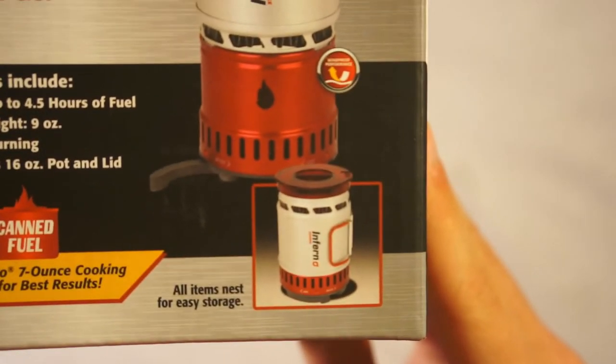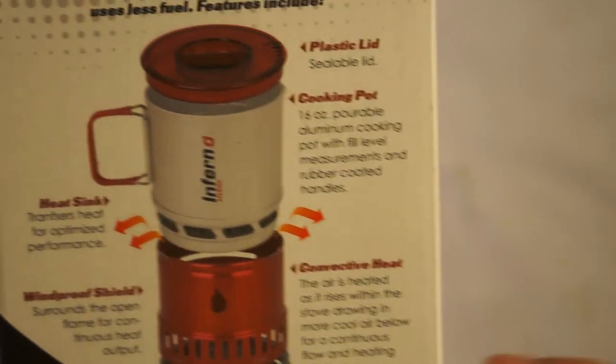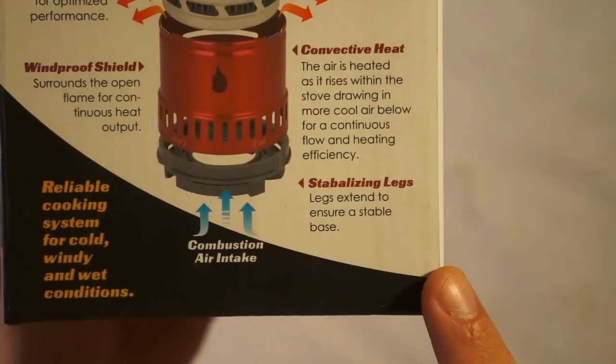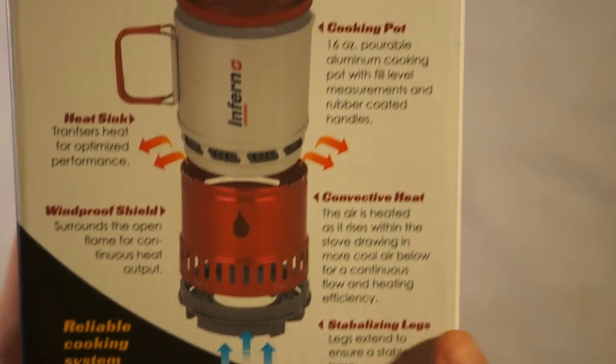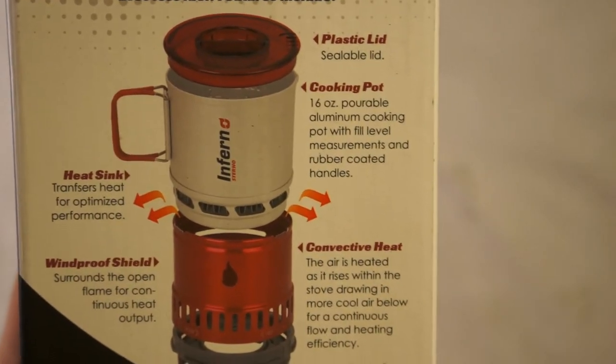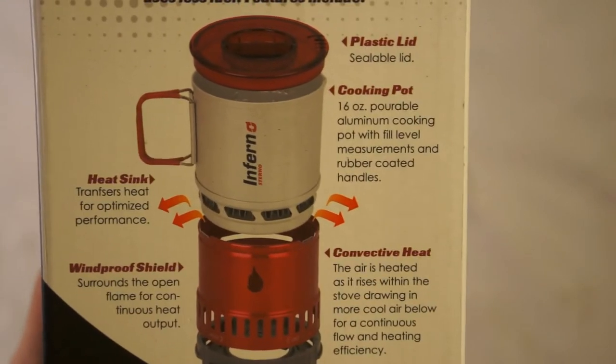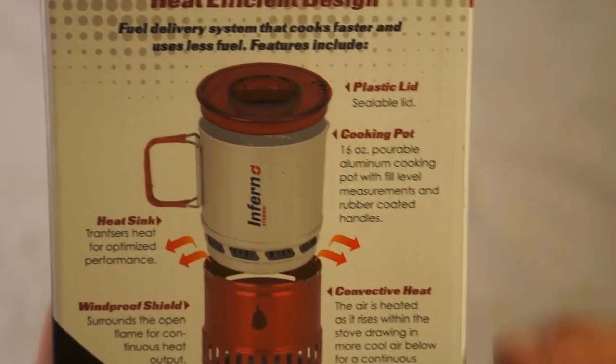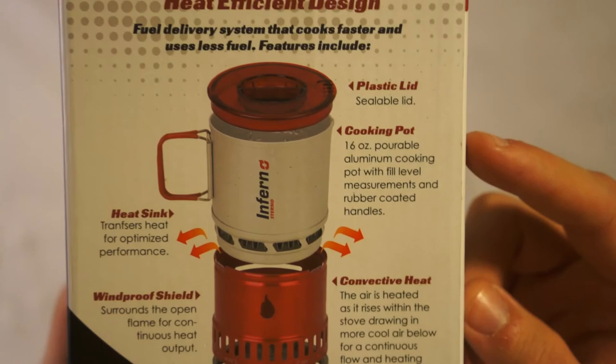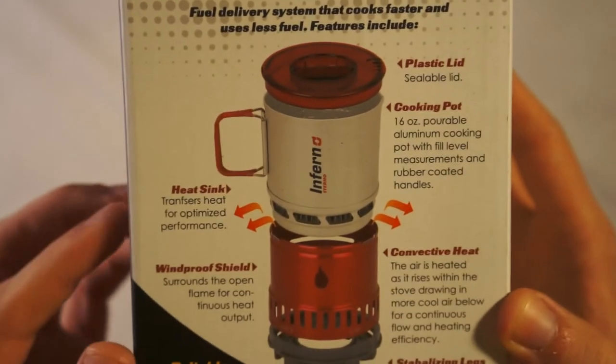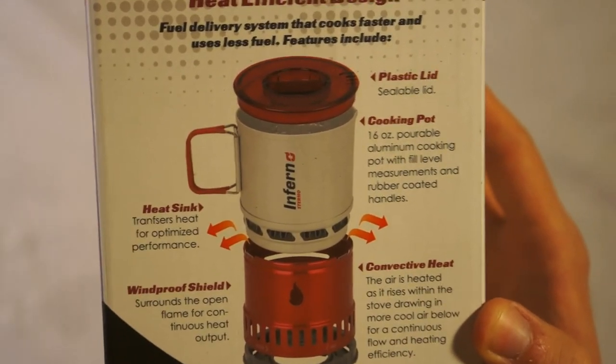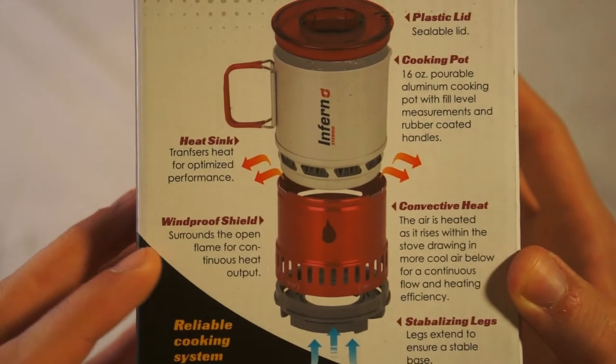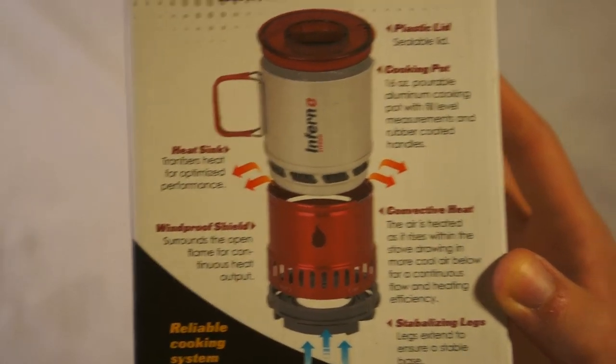And then it just shows it's easy storage. So it has stabilizing legs. It has convection heat. So the heat will disperse and it can intake air. Cooking pot, lid, heat sink. So that's what I was talking about, those coils. And then it has windproof shield. So it won't go out in the wind.